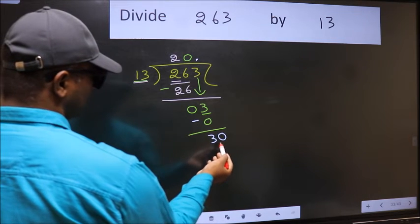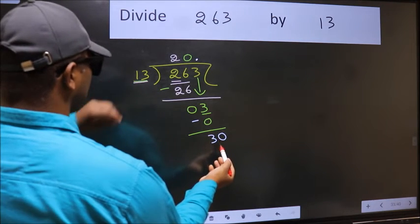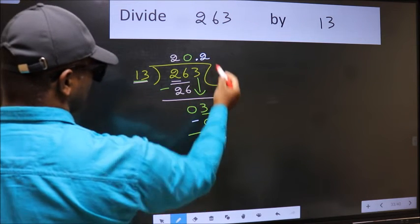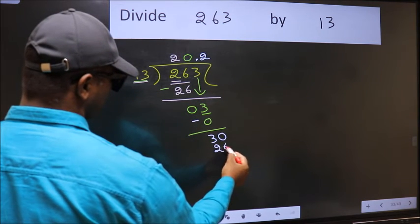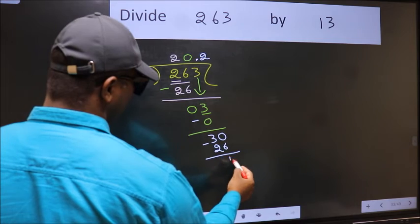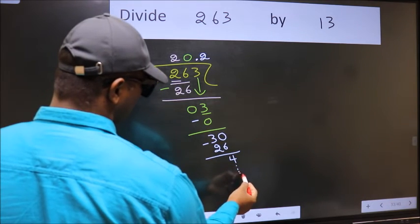So now we can put dot and take 0. So 30. A number close to 30 in 13 table is 13 times 2 is 26. Now we should subtract. We get 4.